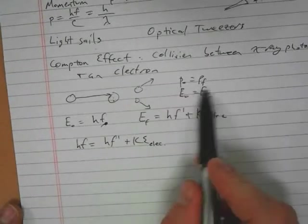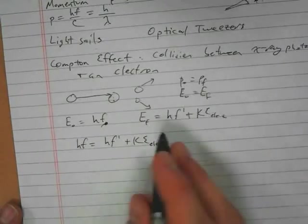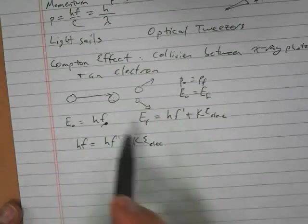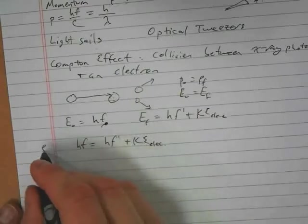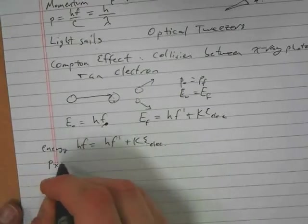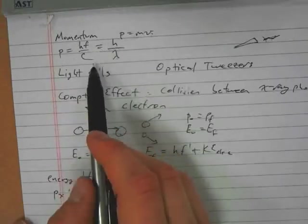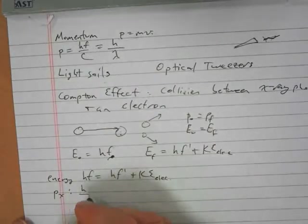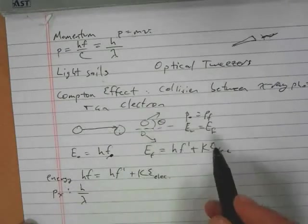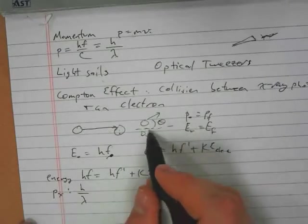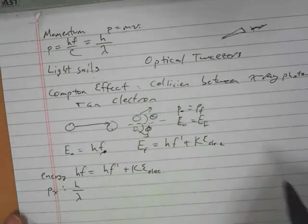And then momentum is conserved. And we can write our conservation of momentum in both the x and y directions. We're going to assume that this is initially moving in the x direction. Initially, this photon has momentum h over lambda. And then we're going to assume that the photon scatters off at some angle theta, and the x-ray scatters off at some angle theta, the electron scatters off at some angle phi.